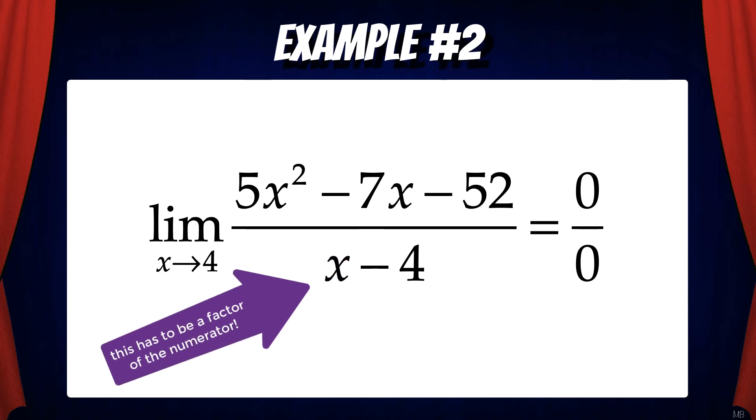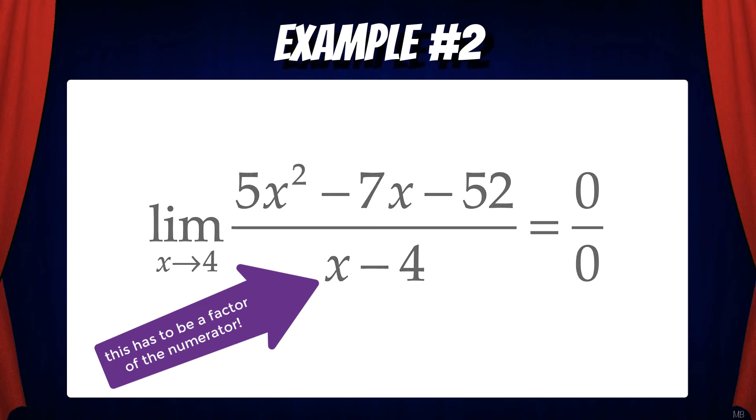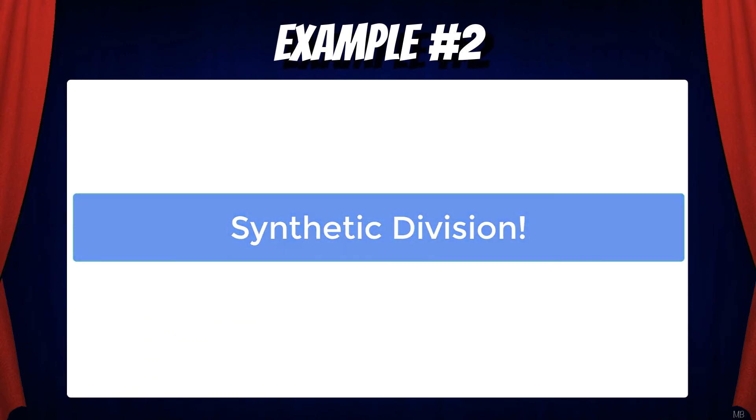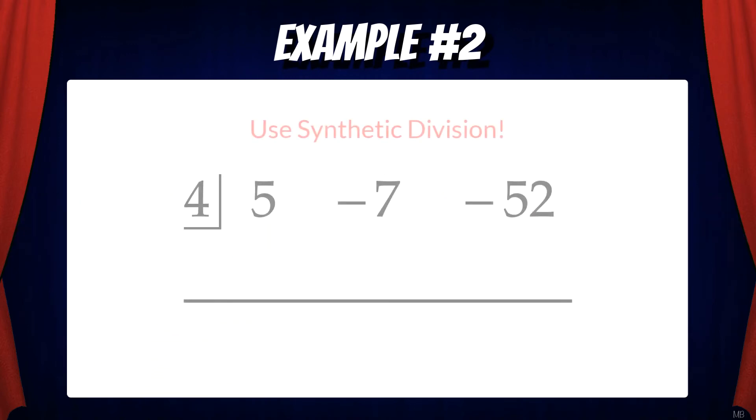In these problems the term in the denominator must cancel out. So we know that x minus 4 has to be a factor of the numerator. So we can divide the numerator by x minus 4. Let's use a trick from algebra. Synthetic division.